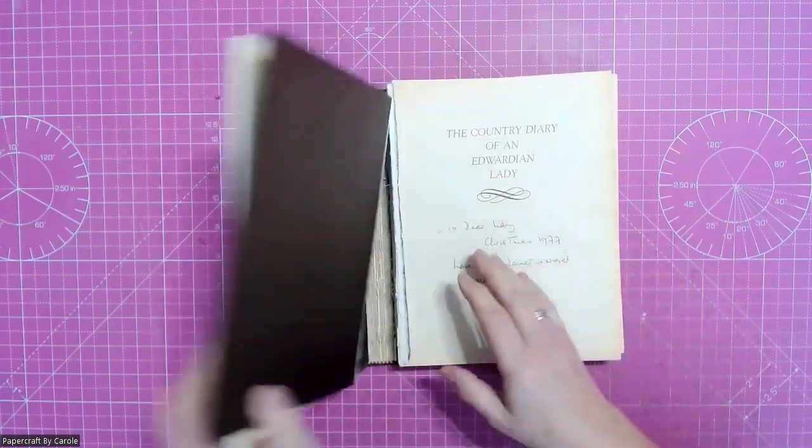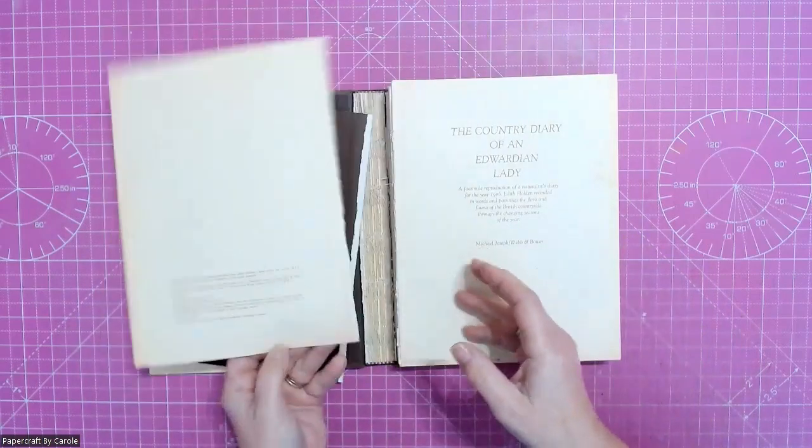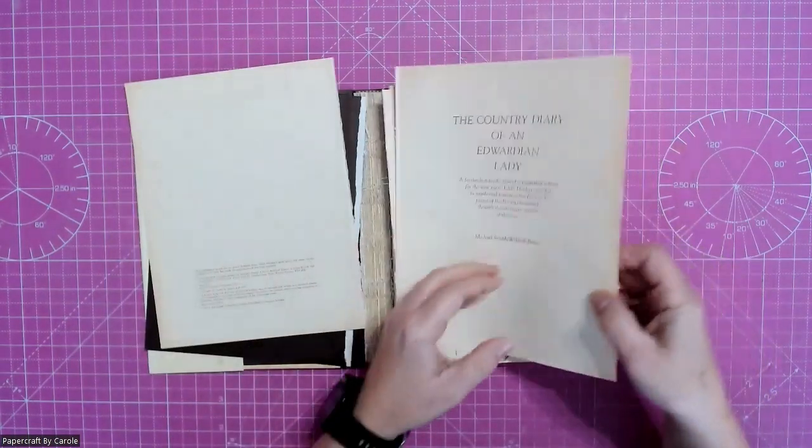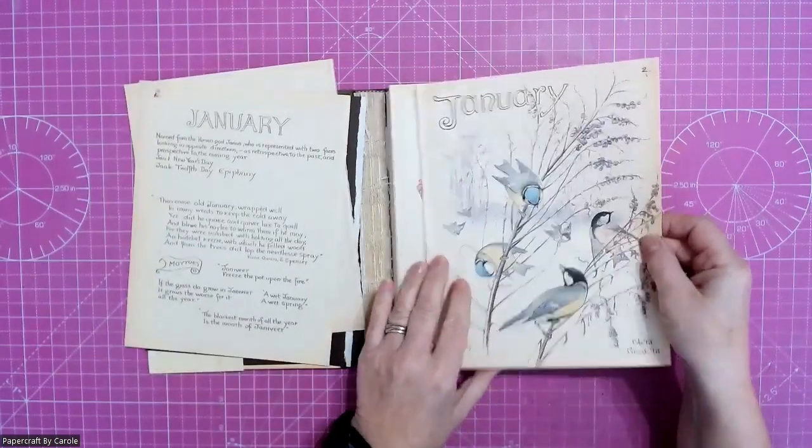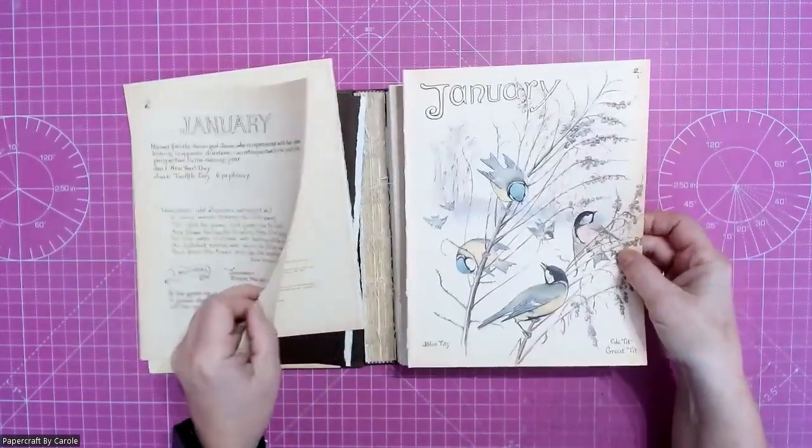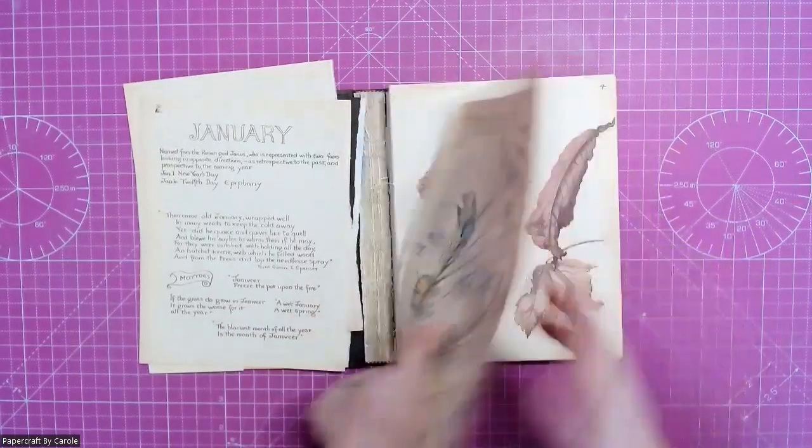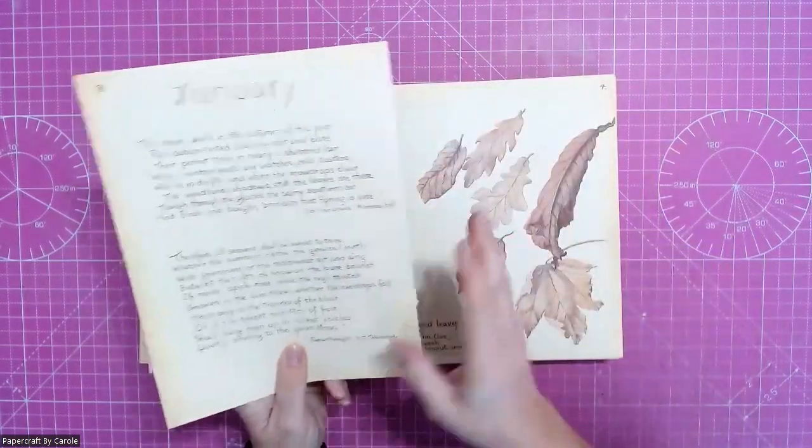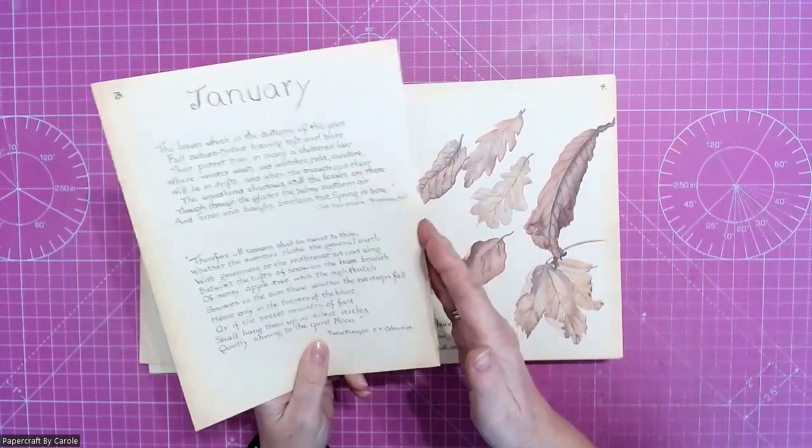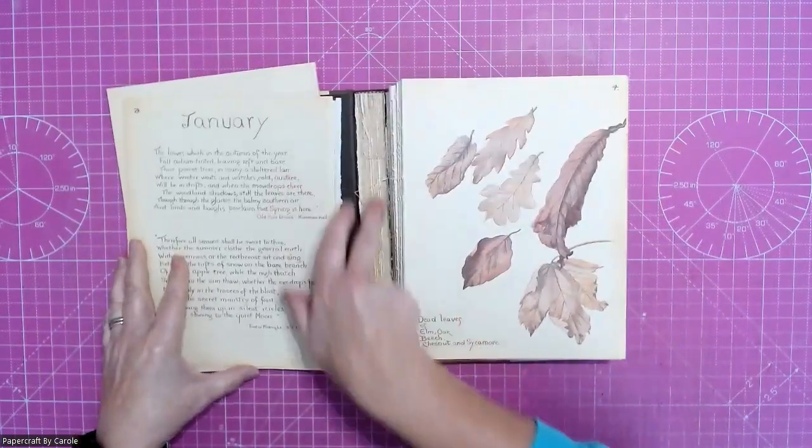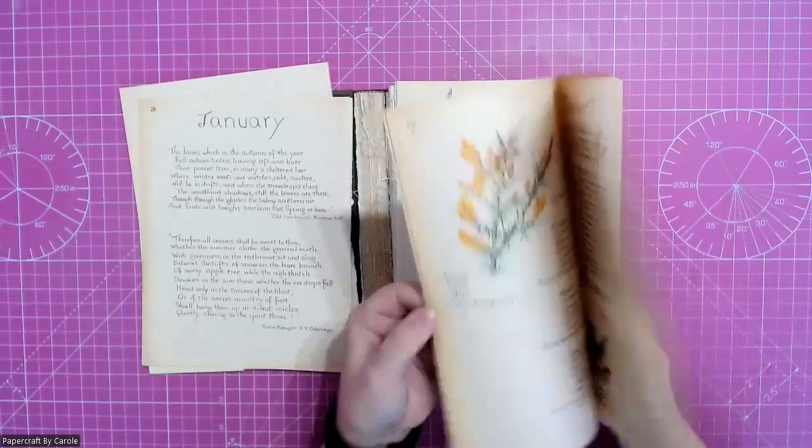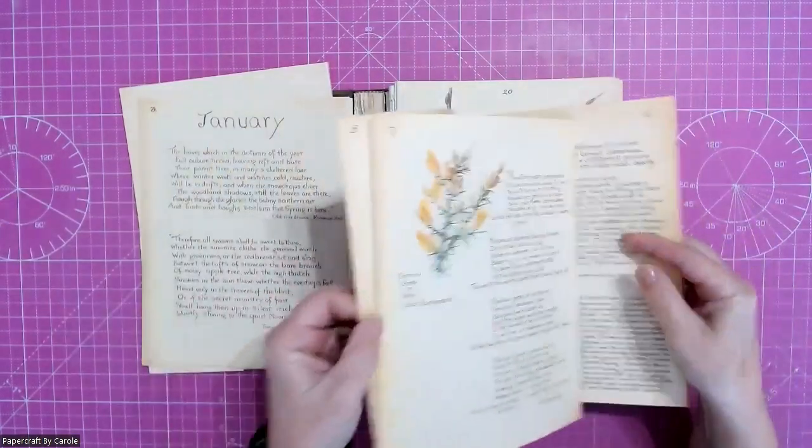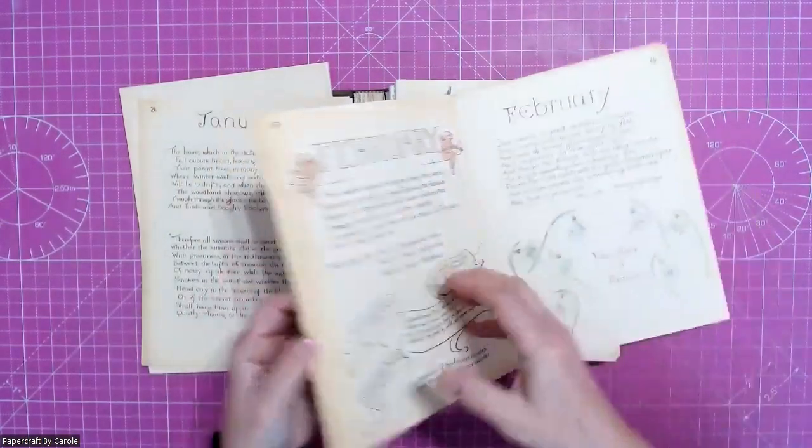What I try to do is these bits at the front tend not to come out in double pages, they tend to get stuck on this part here. But then you can see here that I have got these are all kind of intact, so I just literally go through.